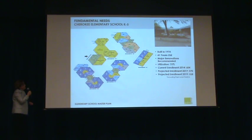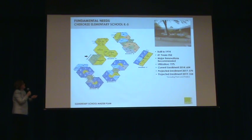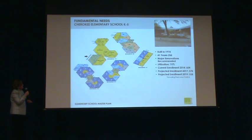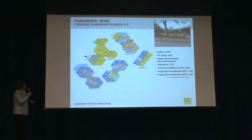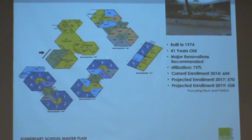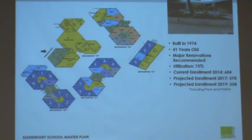Cherokee Elementary School was built in 1974 — it's 41 years old and major renovations are recommended. Its utilization is 75%. Current enrollment for November 2014 is 604. Projected enrollment for 2017 drops a little to 570, and for 2019 to 558.